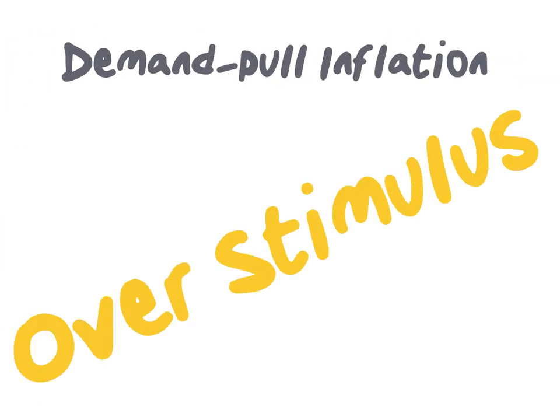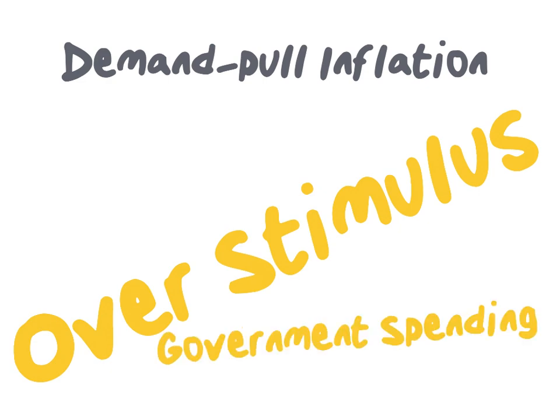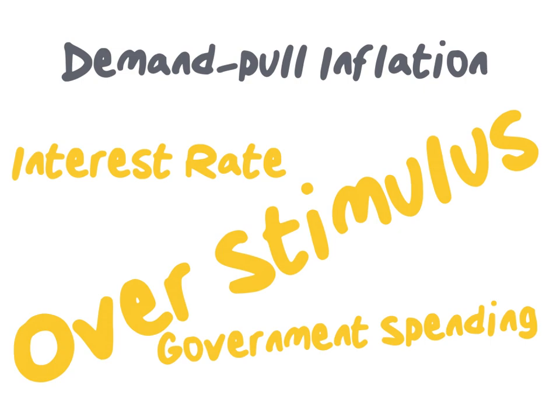One of the common causes of demand-pull inflation is when the economy is over-stimulated. For instance, if the government increases government spending in order to stimulate the economy. Additionally, monetary policy can also contribute to demand-pull inflation where money supply is increased by lowering the interest rate. It is important for policymakers to employ a balanced approach when using expansionary policies so as to not over-stimulate the economy and create demand-pull inflation.